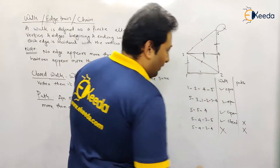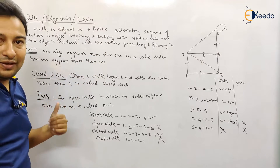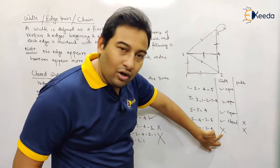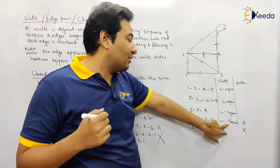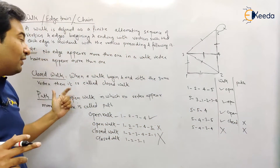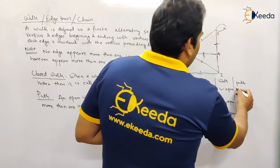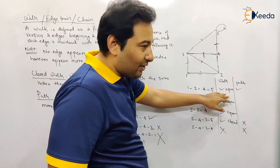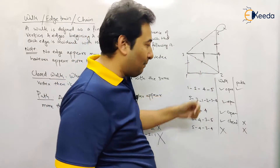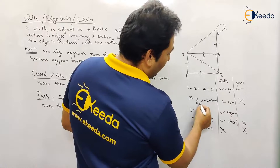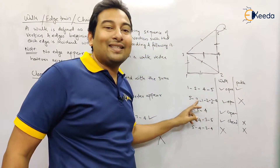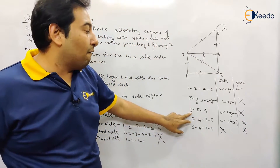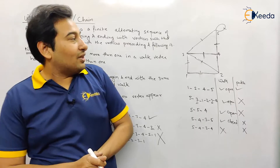Let's check which are paths. Since 5-4-3-4 is not a walk, it cannot be a path — path requires it to be a walk first. The closed walk 5-4-3-5 cannot be a path because path must be an open walk. The first traversal 1-2-4-5 is a path: it's open and no vertex is repeated. The second traversal 5-3-1-2-3-4 is not a path — vertex 3 is repeated. The loop traversal 5-5-4 is not a path either because vertex 5 is repeated.